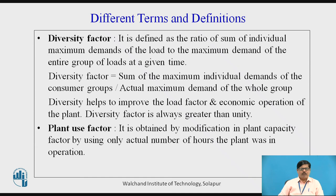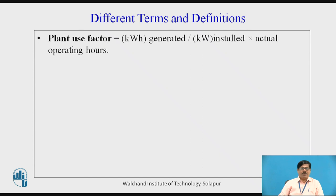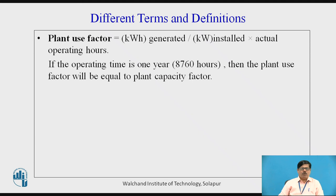The plant use factor is obtained by modifying the plant capacity factor by using only the actual number of hours the plant was in operation. It is expressed as kilowatt-hours generated divided by kilowatts installed multiplied by actual operating hours. When the operating time is one full year (8760 hours), the plant use factor equals the plant capacity factor. When actual operating hours are used instead of total hours, we call it the plant use factor rather than the plant factor or capacity factor.